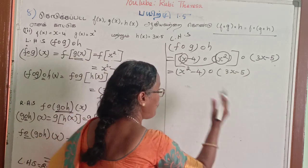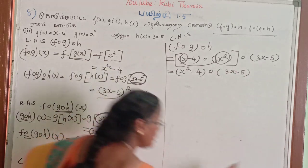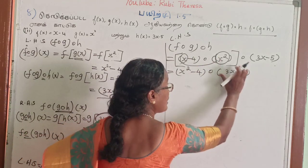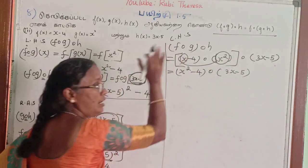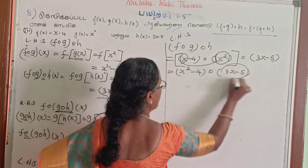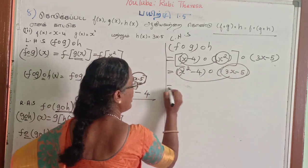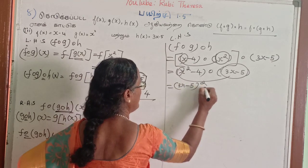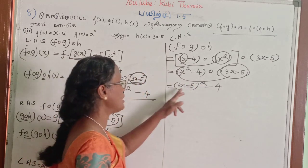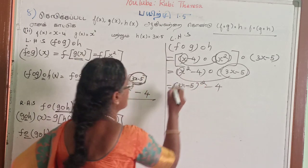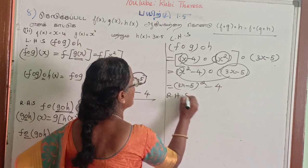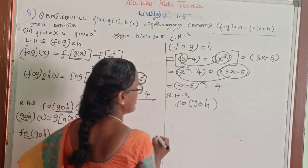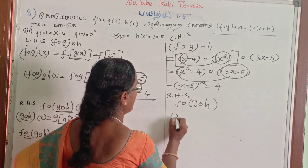X squared is substituted on the right. The left equals the left, and the right equals the right. This confirms the associative property holds.